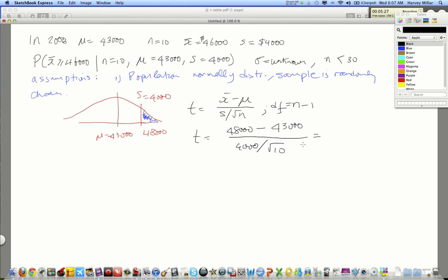The t value turns out to be 3.16 when we do the division. Basically, what we're looking at is 3,000 divided by 4,000 over the square root of 10. And that is 3.16. All right.